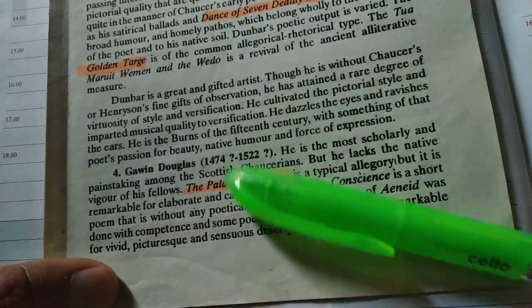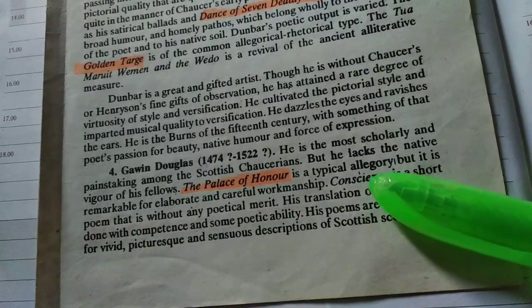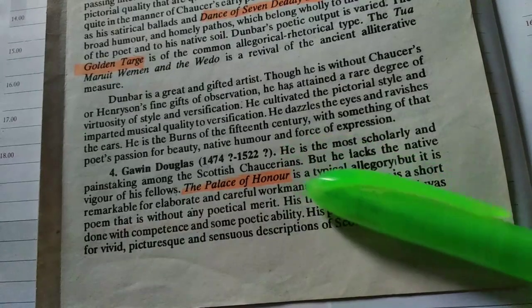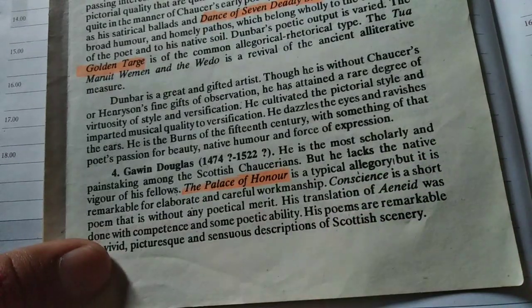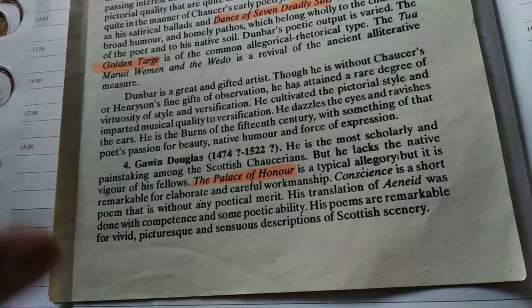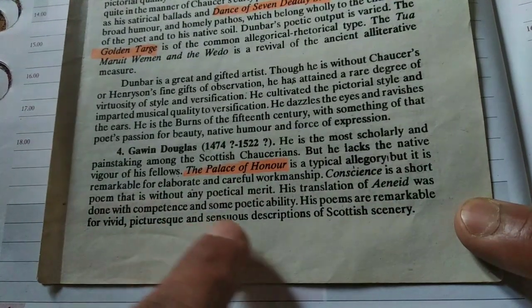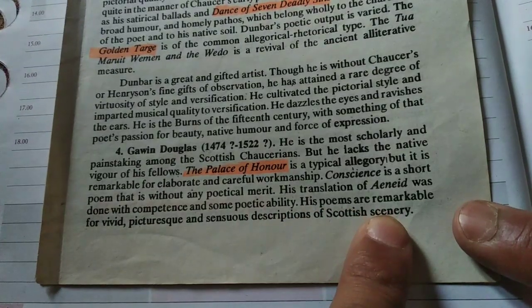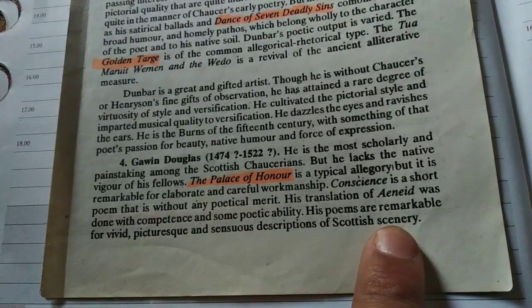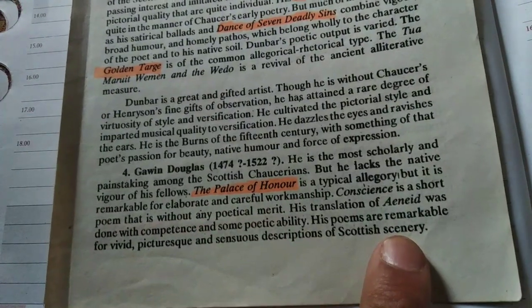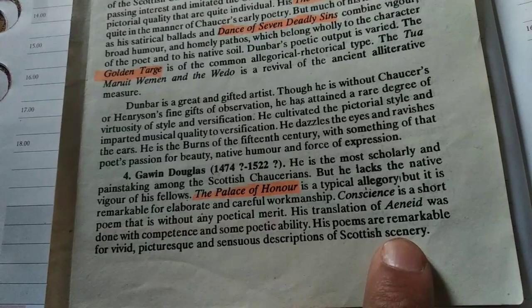Gavin Douglas composed The Palace of Honor, which is a typical allegory. What is important about this writer is that he was the most scholarly and painstaking among the Scottish Chaucerians. His poems are remarkable for vivid, picturesque, and sensuous description of Scottish scenery. As described earlier, they used Scottish scenery and left the landscapes of England behind. That is why The Palace of Honor is considered a remarkable work.